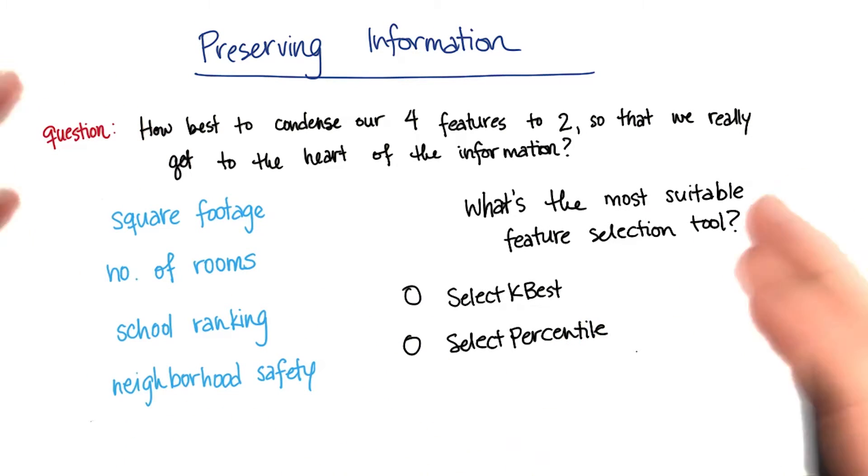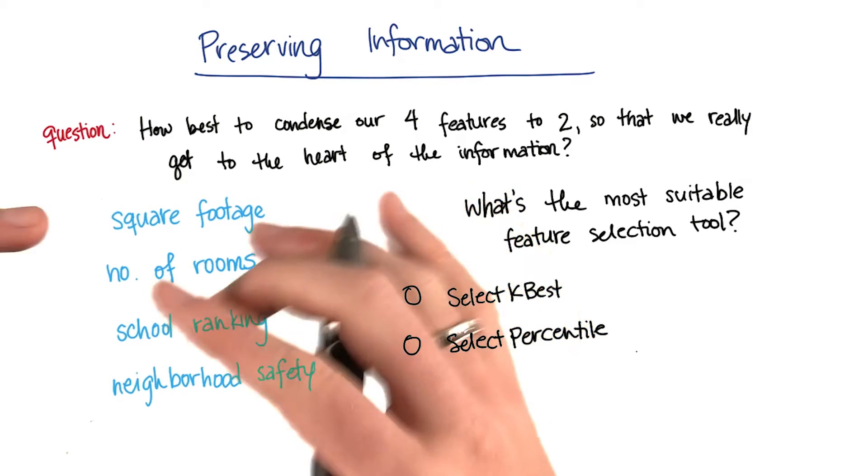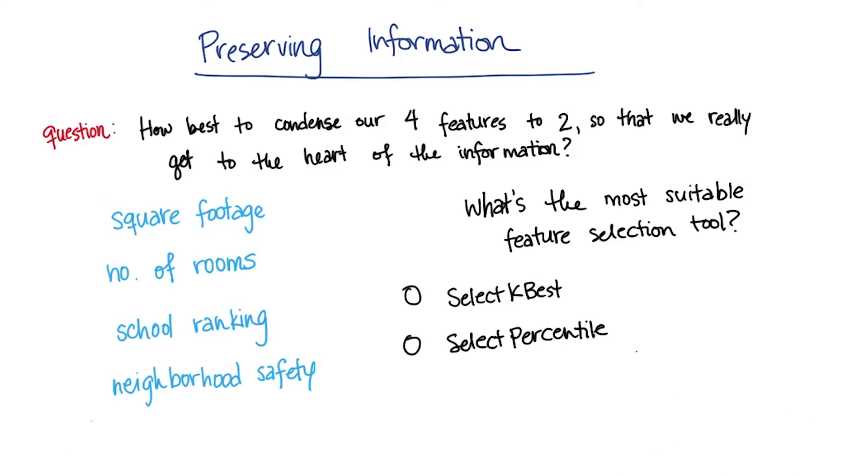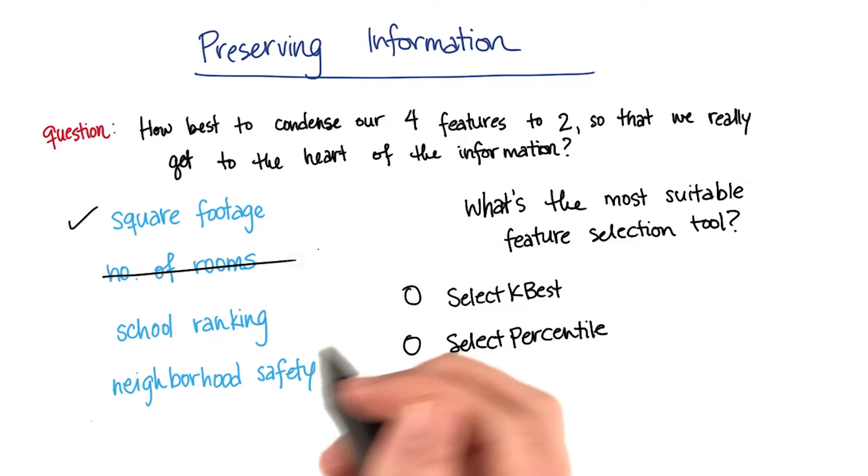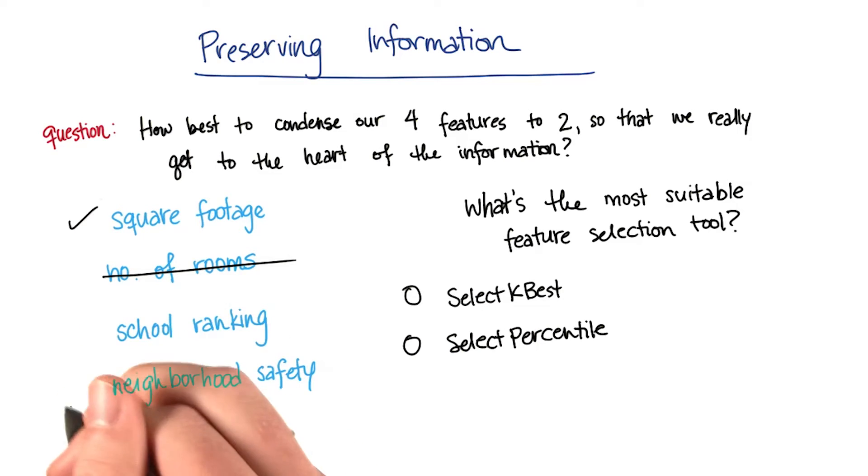One way to get at this is just with simple feature selection, like with the last lesson. And if you put these four features into a feature selection tool, maybe it would keep the square footage but throw out the number of rooms. Maybe it would keep the safety and ignore the school ranking.